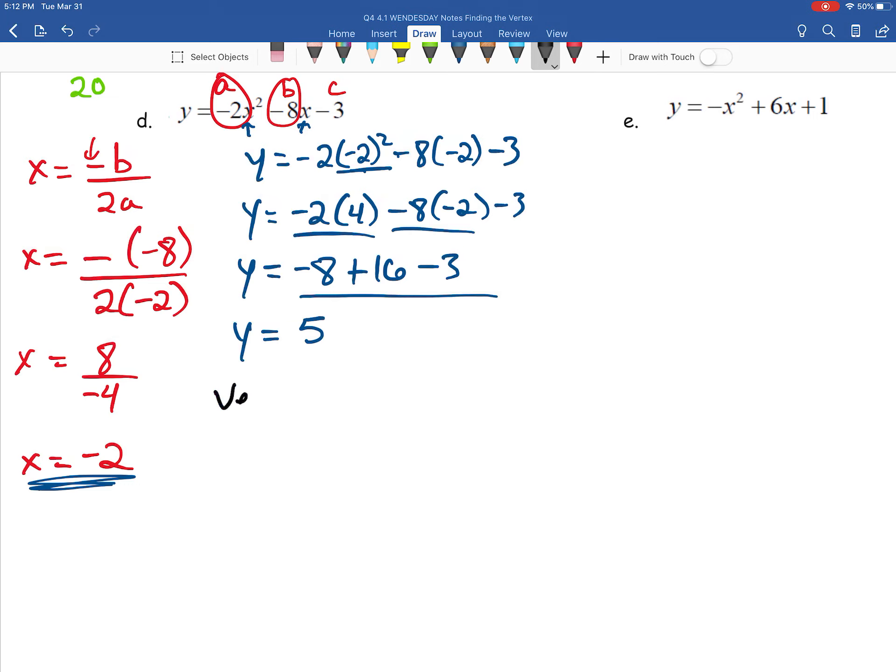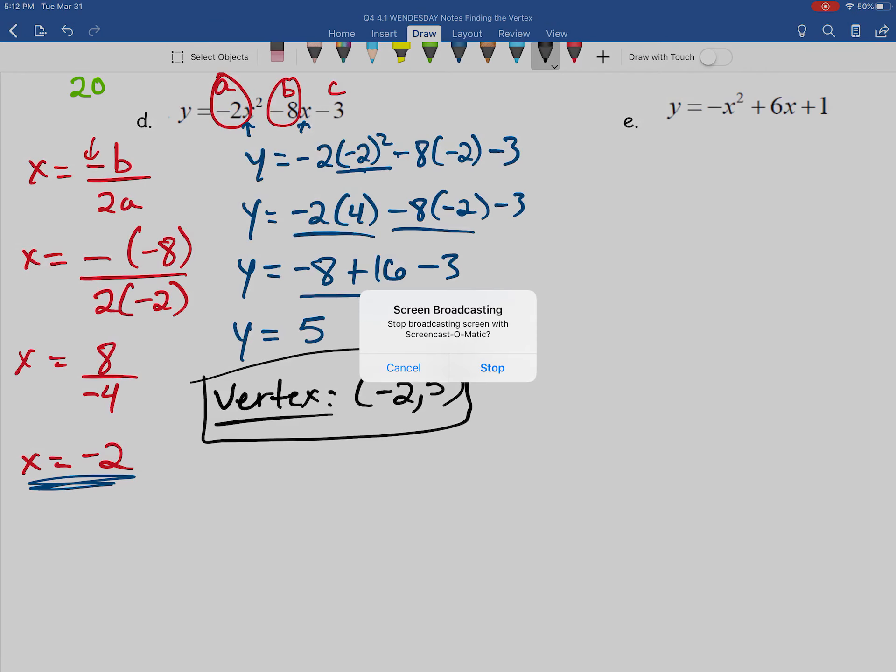So as a result, our vertex comes out to be negative 2, comma 5. Again, though, that is example 2D from our 4.1 set of notes.